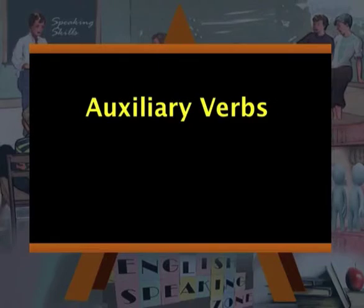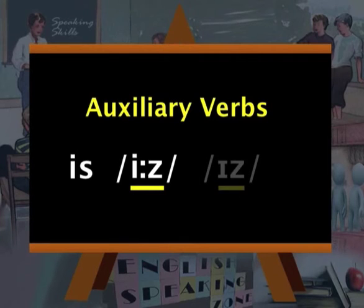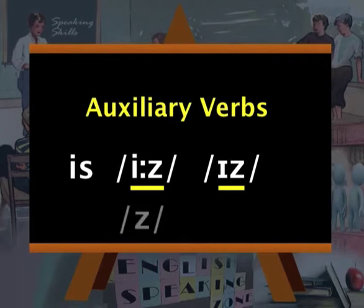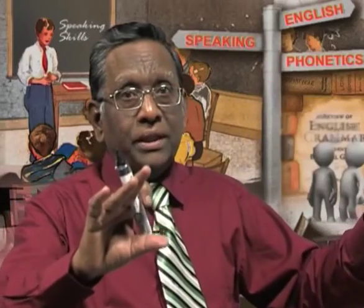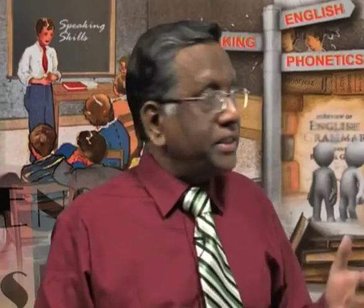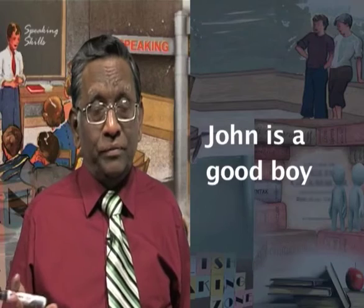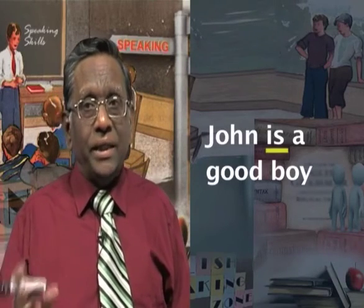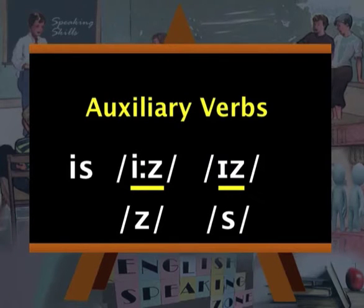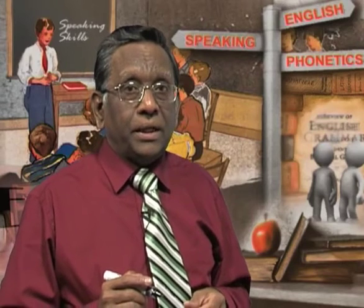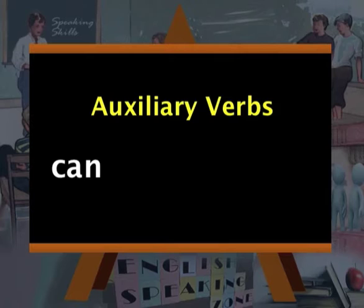Let's take another auxiliary verb 'is.' The strong form is 'IS' but the weak form is 'iz' or sometimes just 'z.' When we say 'it's of no use,' it is not the full form 'it is' — even if written as two separate words, it's pronounced 'it's.' Similarly, 'John's a good boy' — 'John is' is reduced to 'John's,' just a 'z.' These are the weak forms which generally exist in connected speech.